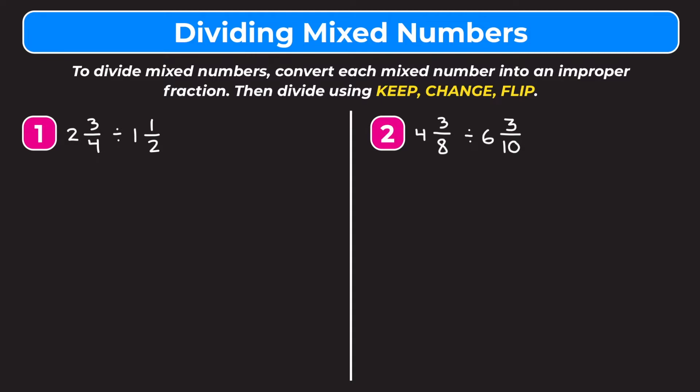If we look at example one, we have two and three-fourths divided by one and a half. We're going to start by changing both mixed numbers into improper fractions.